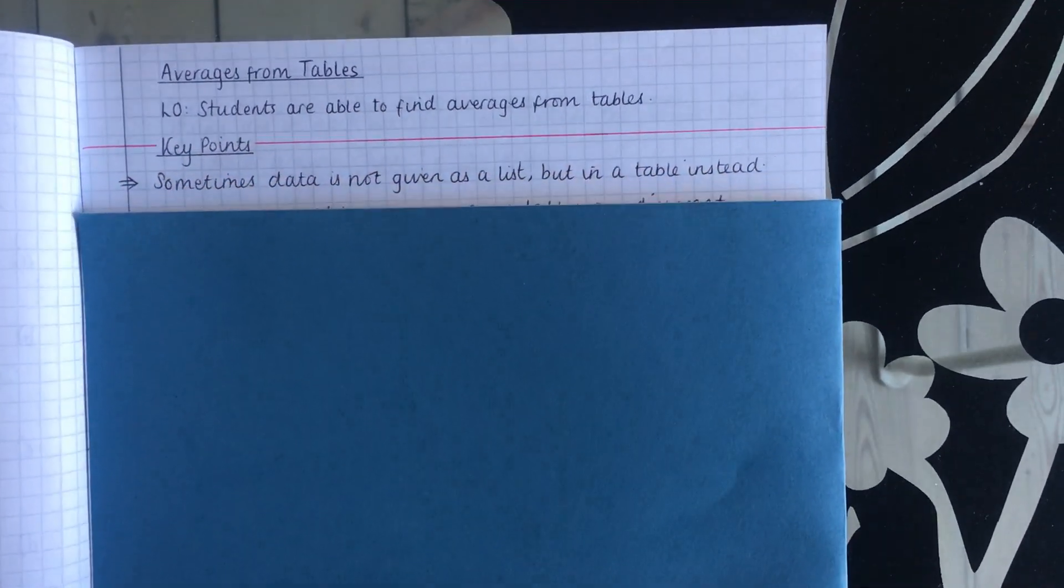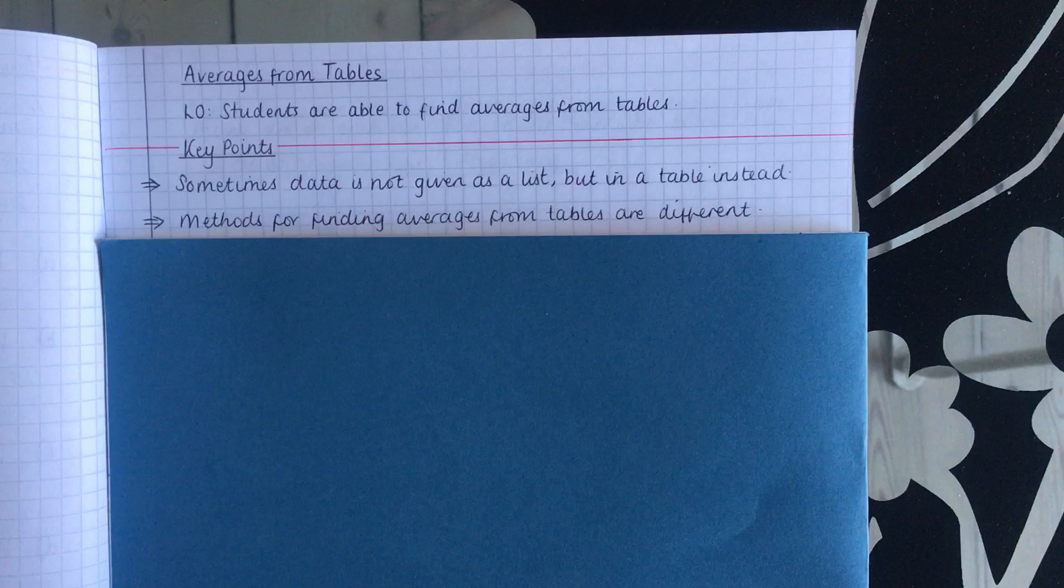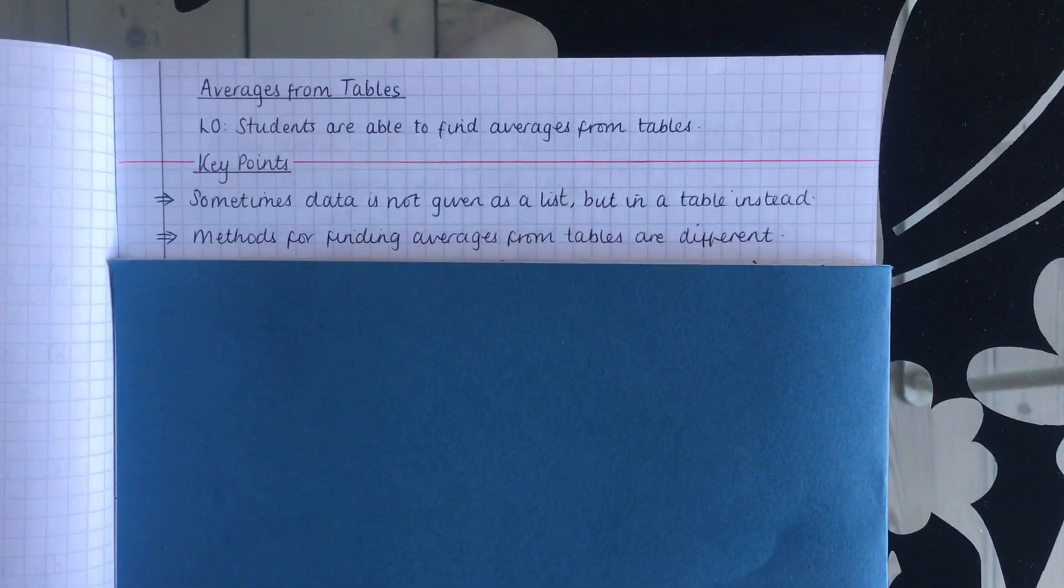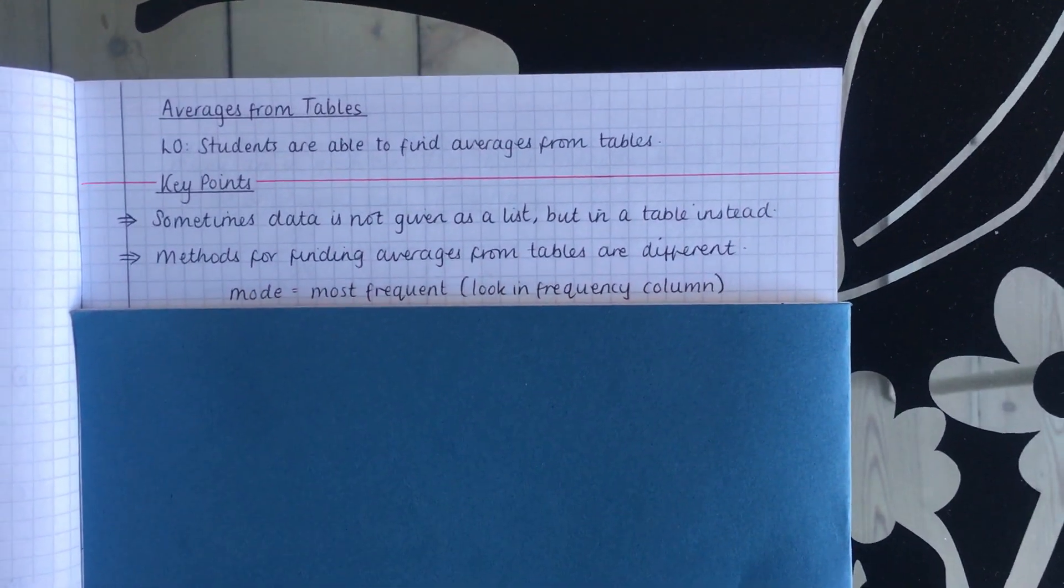So the key points: sometimes data is not given as a list but in a table instead, and the methods for finding the averages are different. Now you need to know what these are.